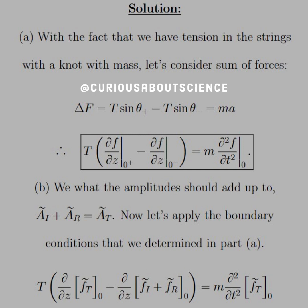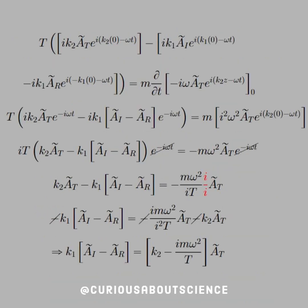We know the amplitudes add up: incident plus reflected equals transmitted. Applying the boundary conditions from Part A — to the right of the boundary we need the transmission term FT, and to the left we need the incident plus reflection terms F_I and F_R. The time derivative of FT is what's needed since we're looking straight to the right of the boundary. Taking these derivatives and evaluating at Z equals zero, they simplify nicely.